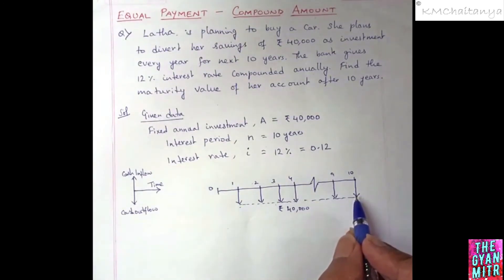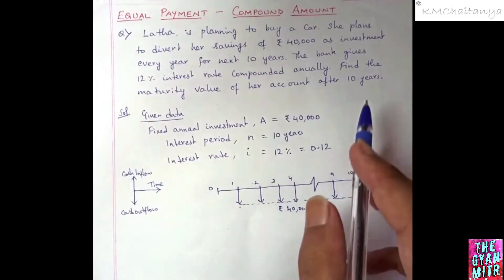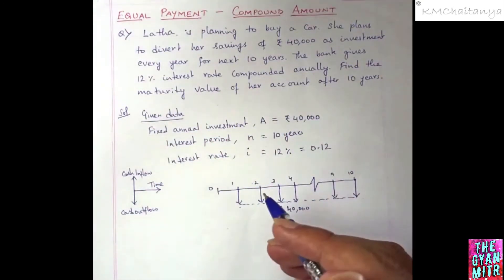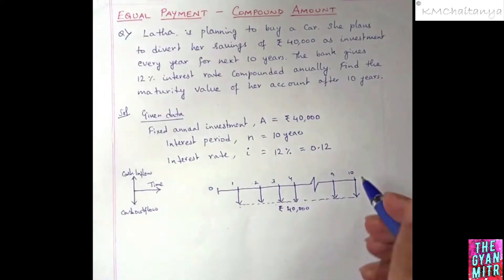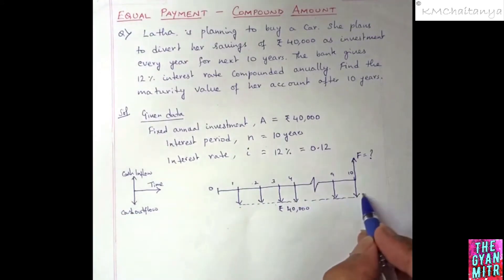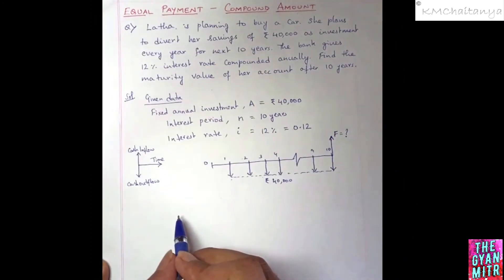Now you are supposed to determine the maturity value of her account. That means after 10 years, how much money is coming into her account. That is the inflow. You are supposed to determine the cash inflow, which is F, that is the future value of this particular investment. So F is what you are supposed to determine. The equation for this is single payment future amount or maturity value.